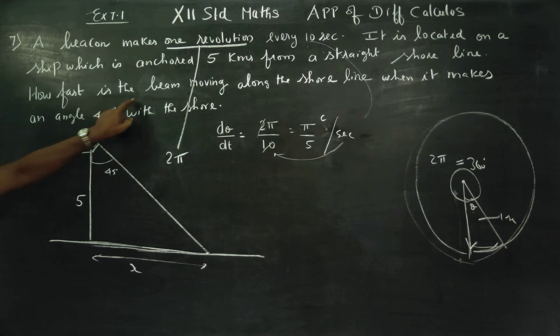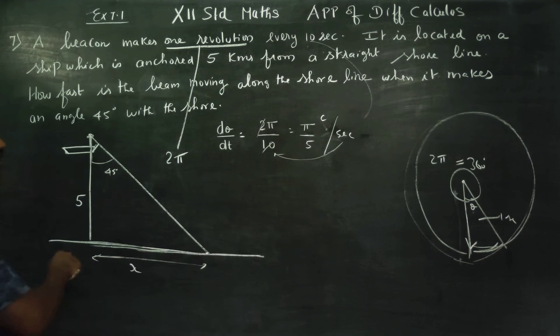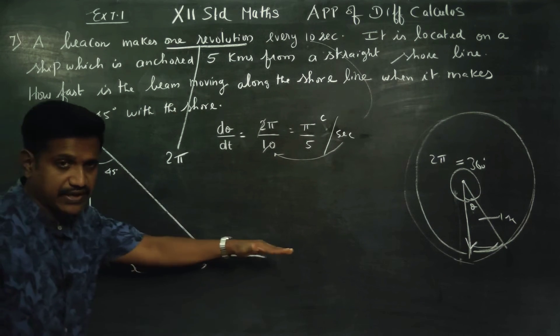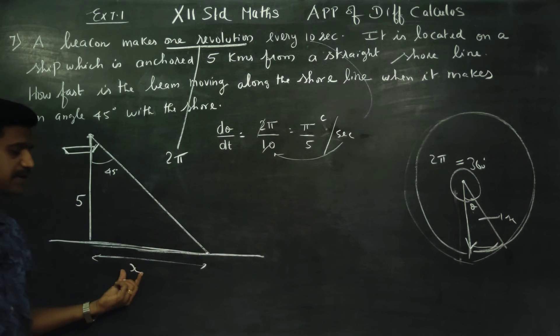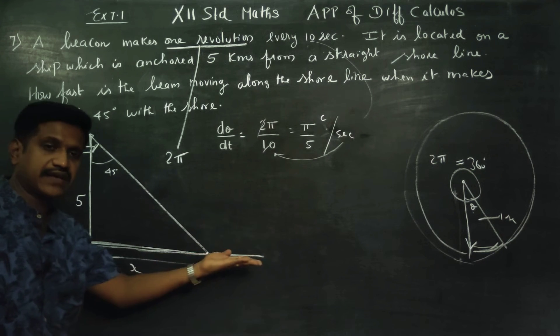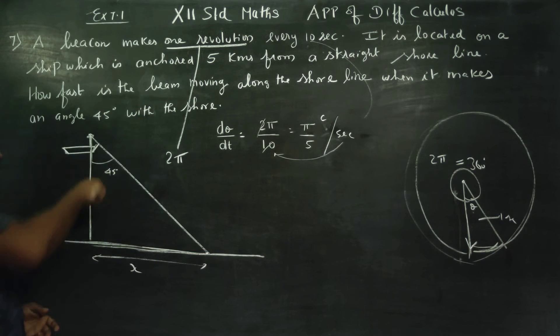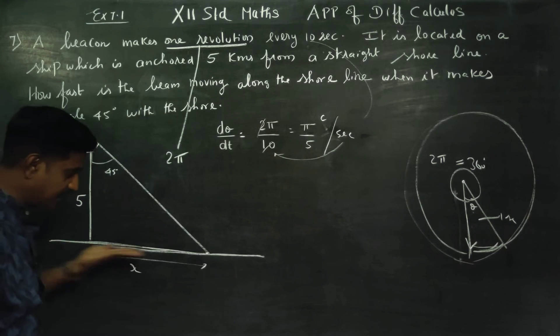How fast is the beam moving along the straight line shore? The distance along the shoreline is called x. The angle between the beam and the shore is θ.